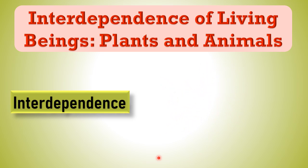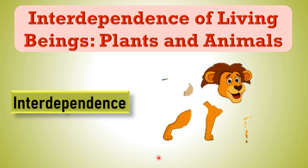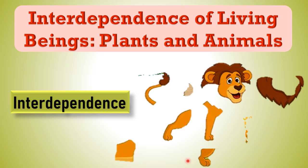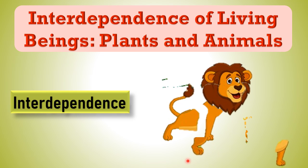This means if any part of the body is missing, then the body will be incomplete. We need all the body parts at the right place to form a complete body. So here we can say all the body parts are dependent on each other to form a complete body.